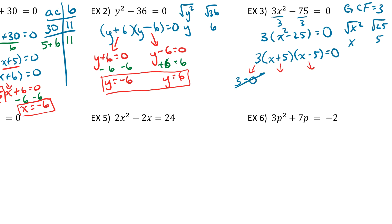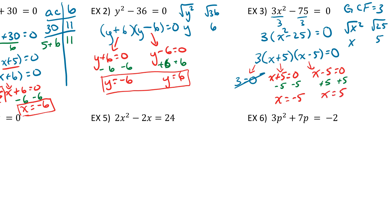In general, unless a factor has an x with it, the number out front is always just going to be thrown out. Then we have x plus 5 equals 0 and x minus 5 equals 0. Subtracting 5 from the first gives x equals negative 5, and adding 5 to the second gives x equals positive 5. Those are our two answers.